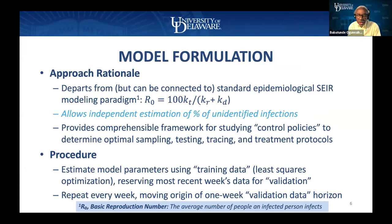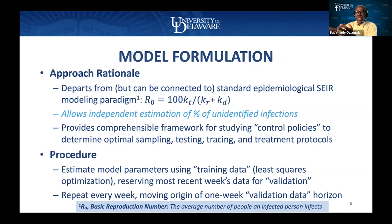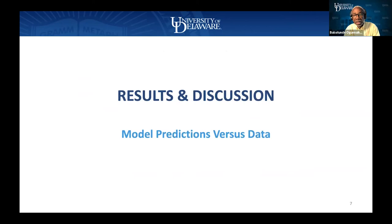From the model, how do we determine the parameters? We take training data and use least squares optimization to obtain these parameters — these weight constants — and we reserve the most recent week of data for validation. In other words, if we had three weeks of data, we use the first two weeks to fit the models, and then try to predict what would have happened the third week as if we didn't have that, and use that for validation. We repeat this every week, moving the origin of the validation data for a moving horizon situation.